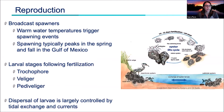Oysters are broadcast spawners, meaning males and females release eggs and sperm into the water column simultaneously. Warm water temperatures trigger spawning events, along with other environmental cues such as salinity. Oysters have a prolonged spawning season, but spawning typically peaks in the spring and fall in the Gulf of Mexico. The first larval stage is the trochophore stage, lasting about two to three days, when larvae develop a ciliated girdle allowing them to swim. They then develop a velum — a swimming and feeding organ — and at this stage they're called veligers, remaining in the water column for two to three weeks.